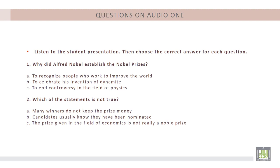Question number one: Why did Alfred Nobel establish the Nobel Prizes? A. To recognize people who work to improve the world. B. To celebrate his invention of dynamite. C. To end controversy in the field of physics. The correct answer is A: to recognize people who work to improve the world.